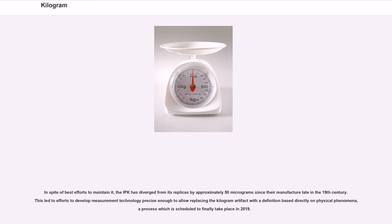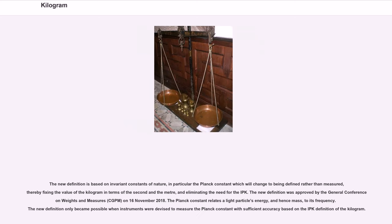In spite of best efforts to maintain it, the IPK has diverged from its replicas by approximately 50 micrograms since their manufacture late in the 19th century. This led to efforts to develop measurement technology precise enough to allow replacing the kilogram artifact with a definition based directly on physical phenomena, a process scheduled to finally take place in 2019. The new definition is based on invariant constants of nature, in particular the Planck constant, thereby fixing the value of the kilogram in terms of the second and the meter, and eliminating the need for the IPK.